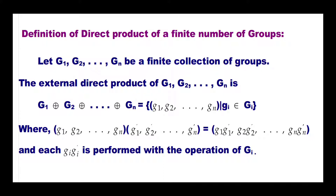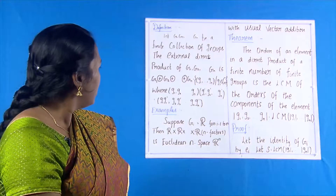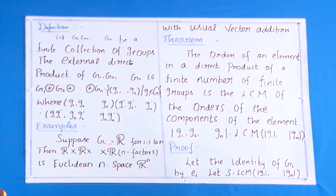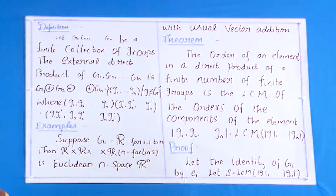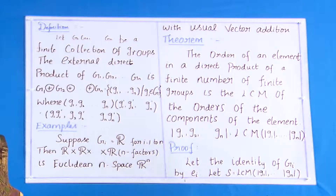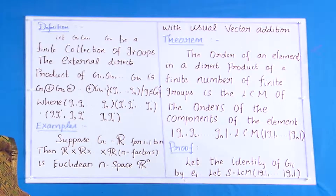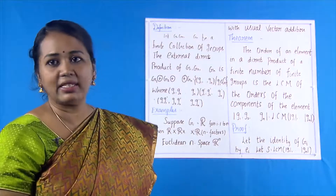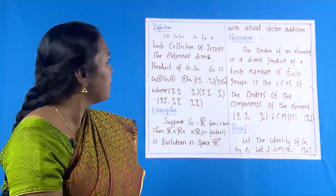For an example, suppose Gᵢ is the set of real numbers for i = 1, 2, …, n. The direct product R × R × … × R (n factors) is the Euclidean n-space ℝⁿ, using the usual vector addition. This is an example of the direct product.